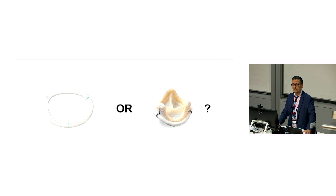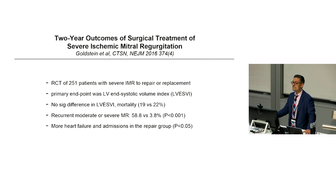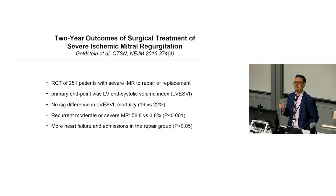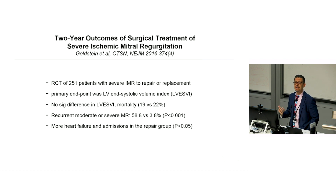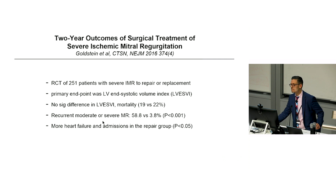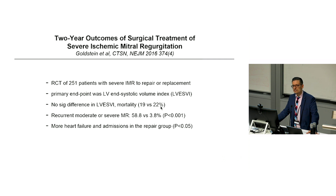Repair or replace — it's the great question. A study published in the New England Journal in 2016 reported two-year outcomes of surgical treatment of severe ischemic MR — a randomized trial of 251 patients to repair or replacement. The primary endpoint was LV end-systolic volume index; there was no significant difference in end-systolic volume or mortality, but recurrent moderate or severe MR was 58% at two years in the repair group, which is astounding. This has started to change practice, with surgeons now tending to replace. There was much more heart failure admission in the repair group.